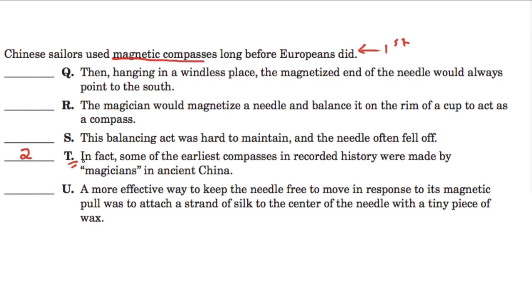And then it goes into detail and it's further going into detail saying, in fact, some of them, some of the earliest compasses were made by magicians in ancient China. So, it's kind of zooming in. First, it's saying that Chinese sailors used magnetic compasses long before Europeans did. And then it's getting into more detail, zooming in saying, well, specifically, it was the magicians in ancient China that made these compasses. So, I mean, look at Q, for example.